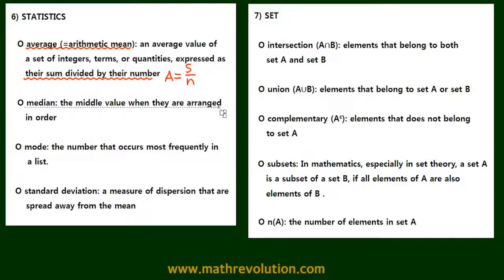Second, the median is the middle value when they are arranged in order, and the mode is the number that occurs most frequently. Let me give you an example. Let's say we have a set of numbers: 2, 3, 3, 4, and 5. Now let's first calculate the median.